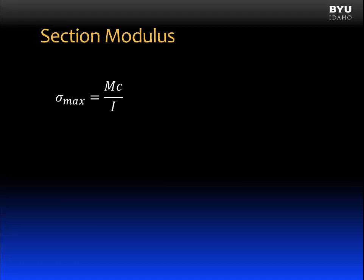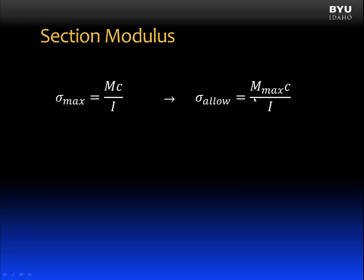Here's the equation for the maximum normal stress at a cross section in a beam. When we are designing a beam, we will set the maximum stress equal to our allowable stress — that's the stress that we will not allow the beam to exceed — and that will be equal to the maximum moment in the beam times c over I. In design, we typically know the material we are going to be using, so we know our allowable normal stress. We know the loads and the geometry of the member, so we know what the maximum moment is. But the variables c and I are typically unknown — they are the design variables.